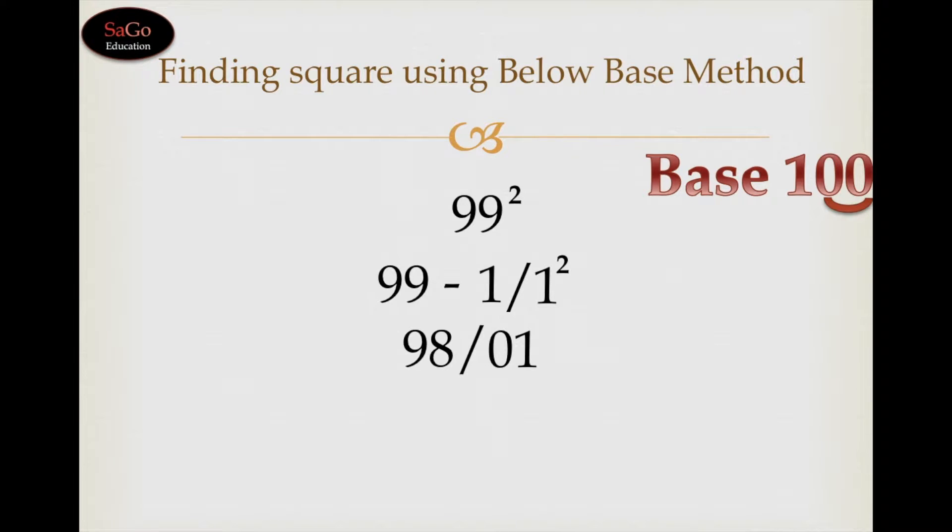Just to balance the number, we would prefix 0 before 1 and make it a two-digit number. So we would write 01 as it is, and we would multiply 98 by 1 because we have taken the base 100. 98 multiplied by 1 is 98. So 99 squared is 9801.